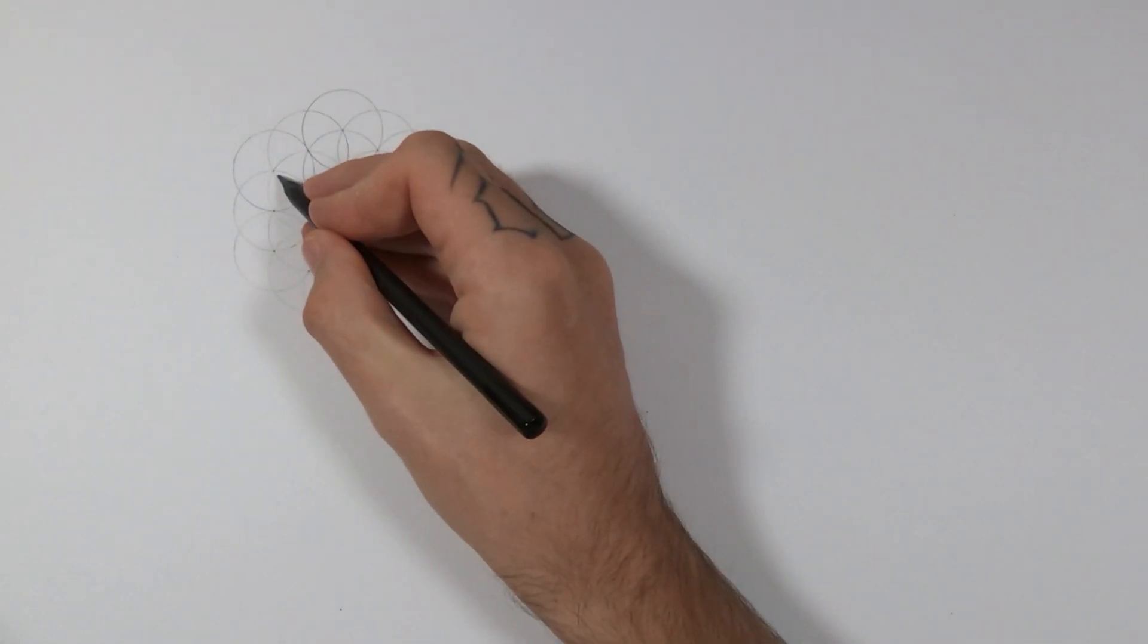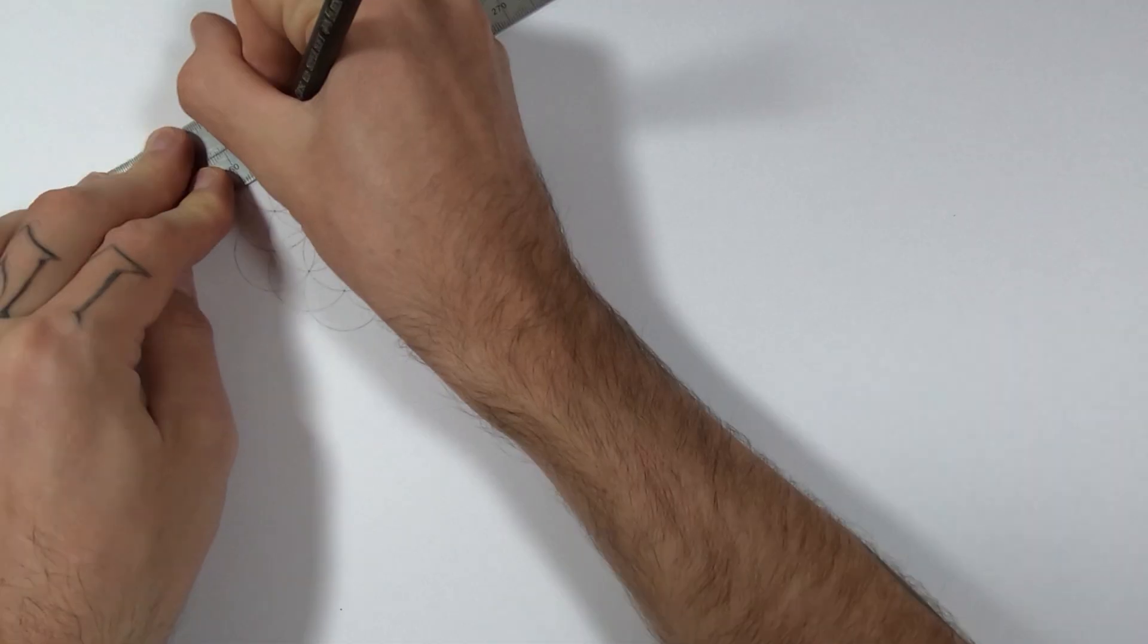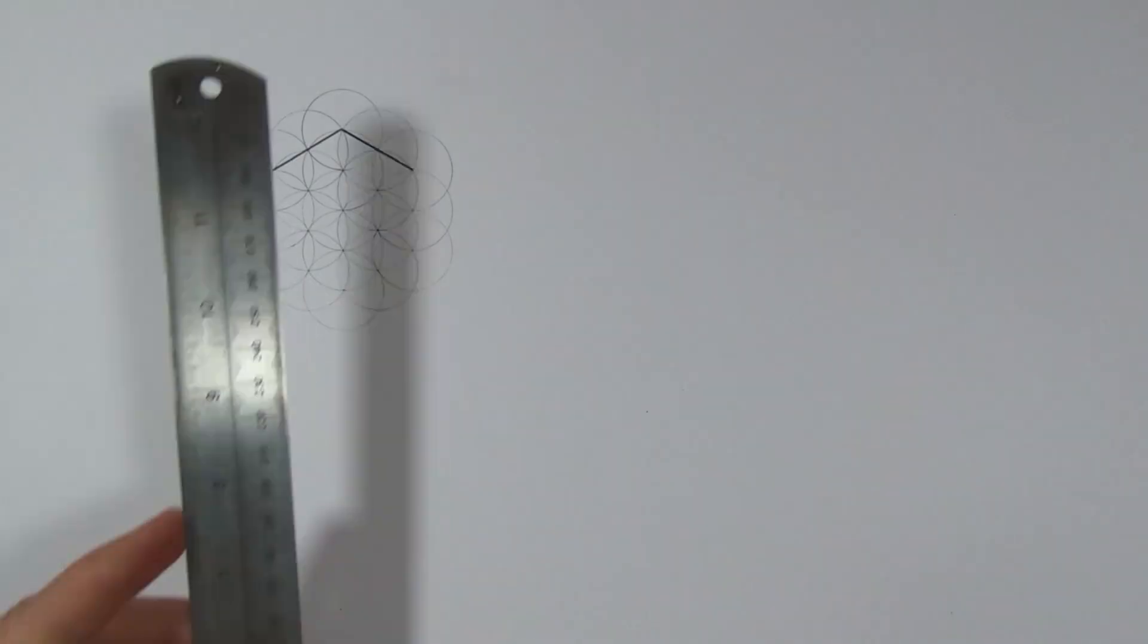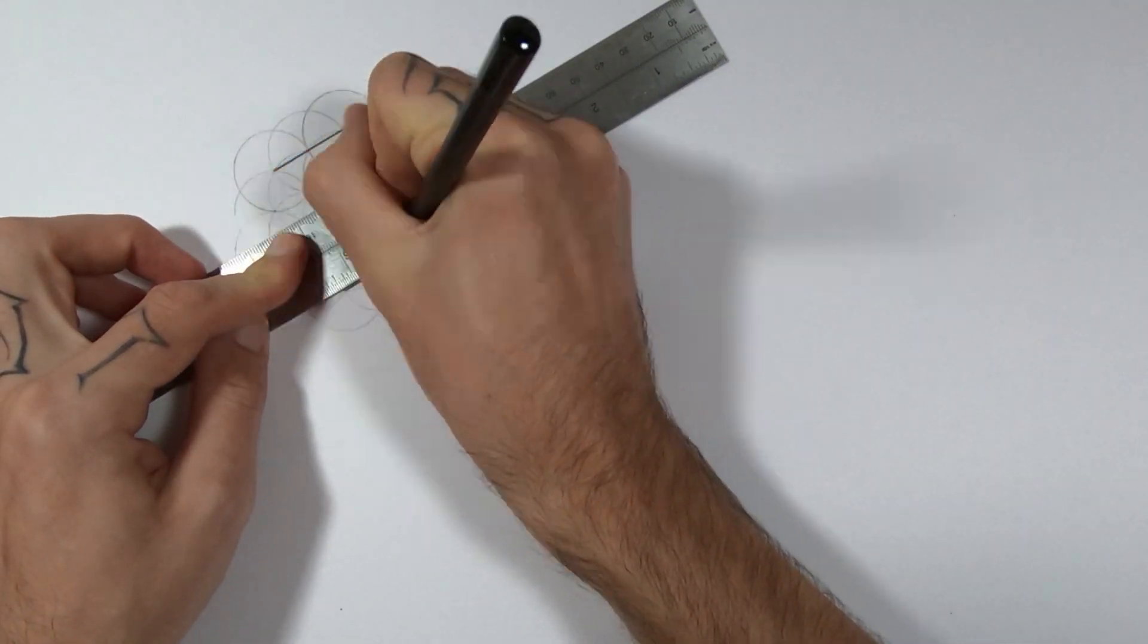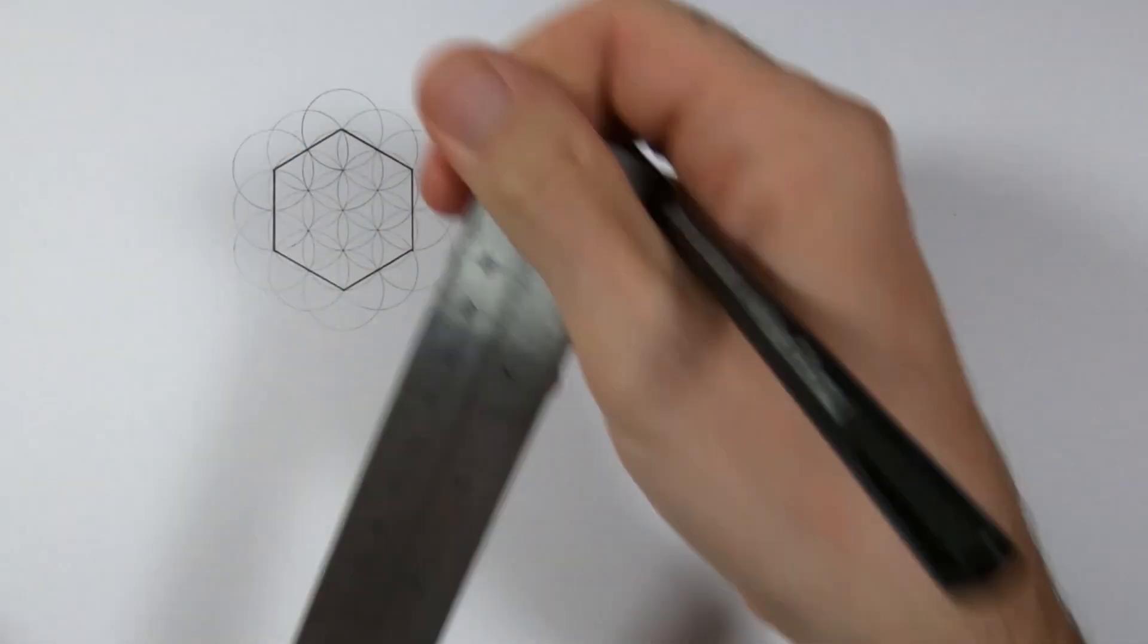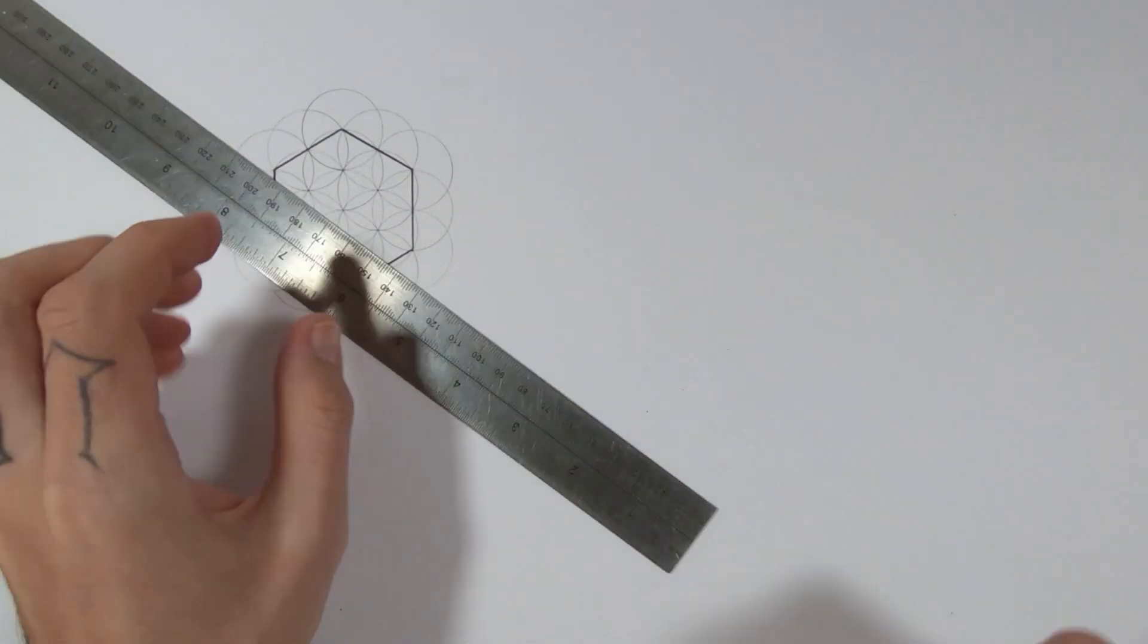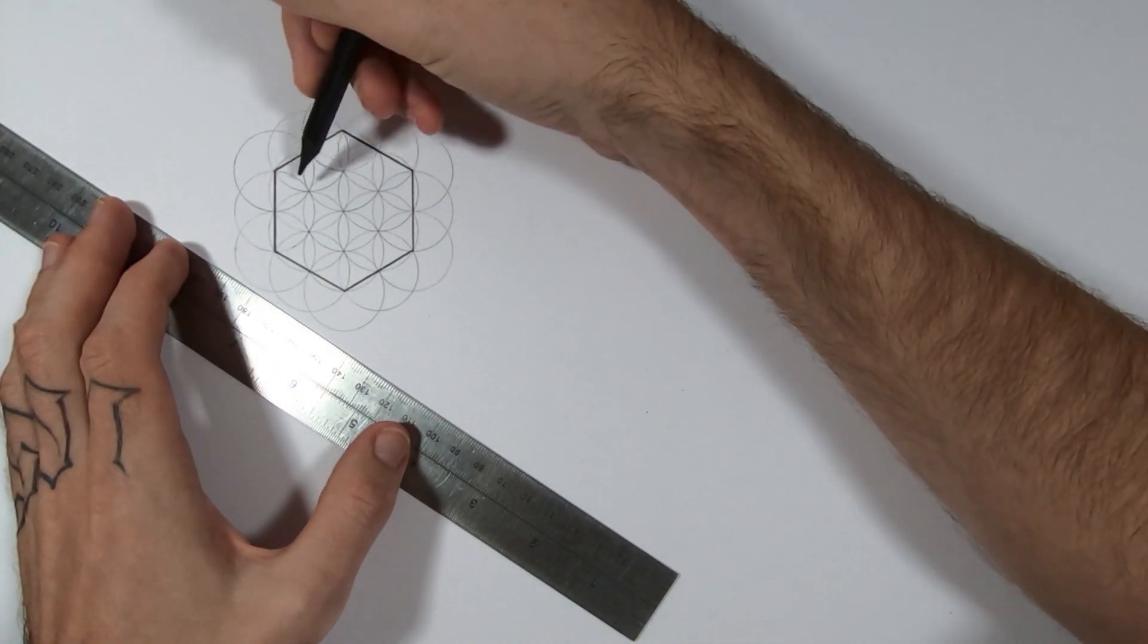The first thing to do is connect these two intersections on the outside of the flower of life and then work your way around doing exactly the same thing until you've got a hexagon, which is a 2D shape. To make it 3D all we got to do is connect the corners to the center point and then you've got a cube, which is our first platonic solid.